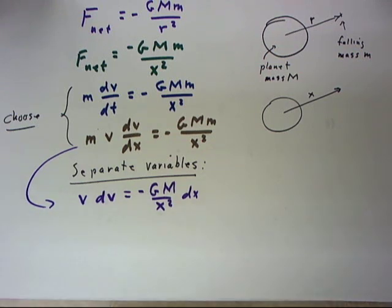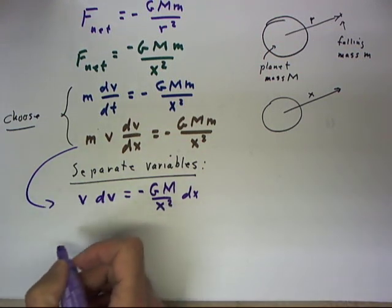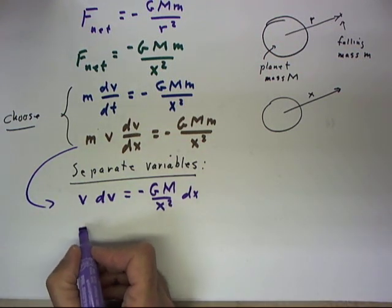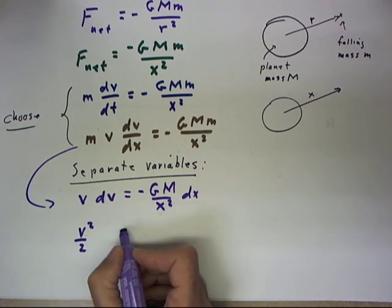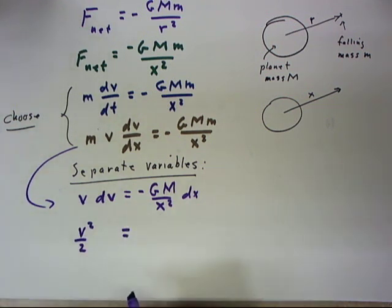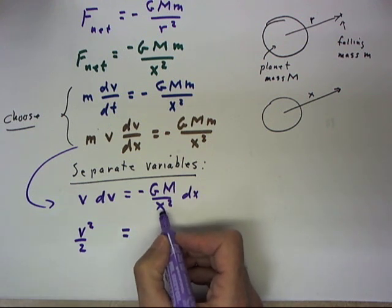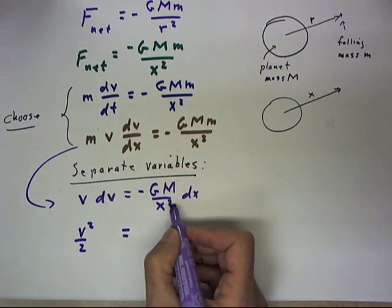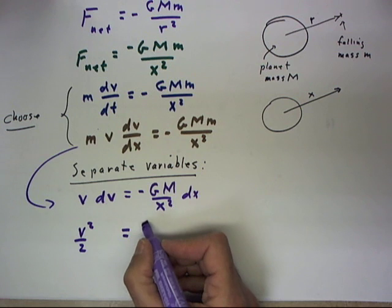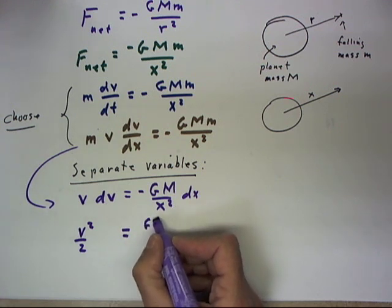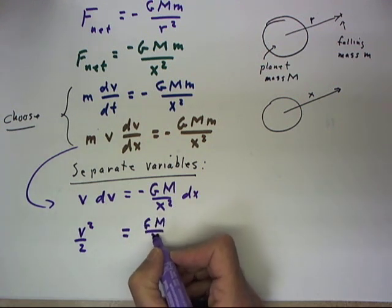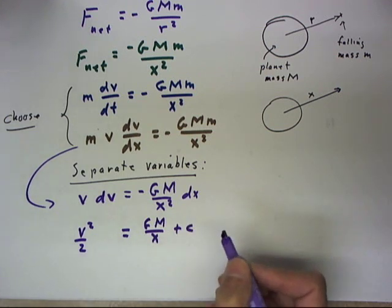Both of these sides are very easy to integrate. We integrate this side and we end up with V squared over 2. On this side, the integral of reciprocal of X squared is the negative reciprocal of X. So we're going to end up with GM over X plus some constant.